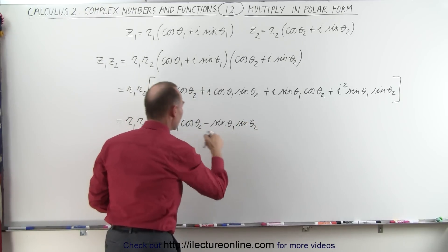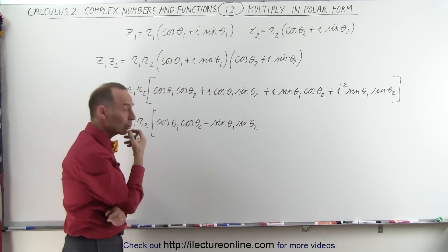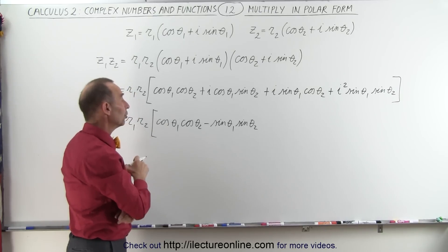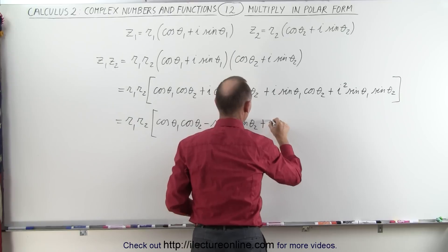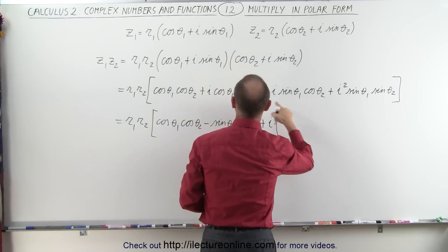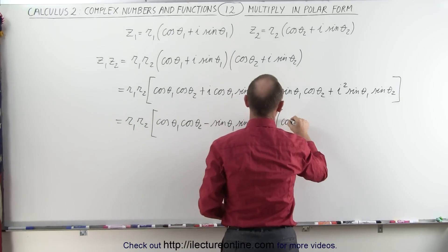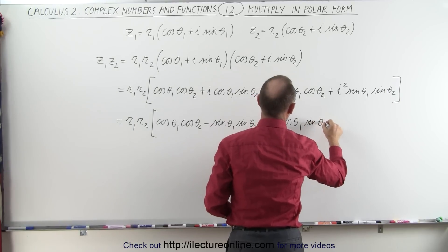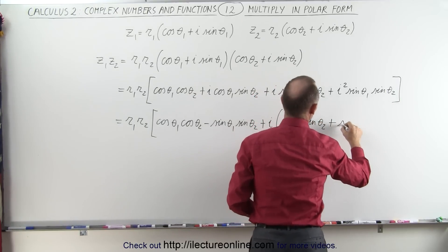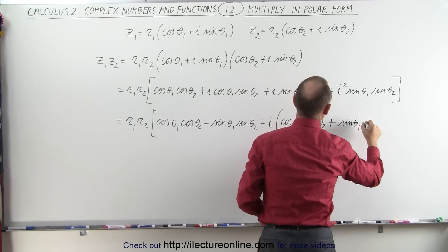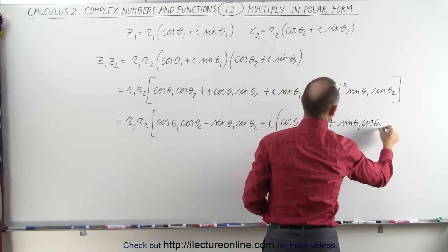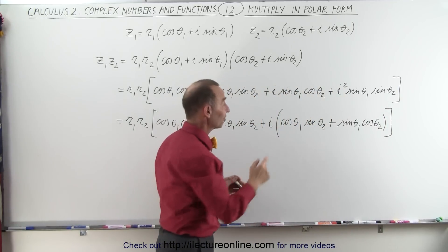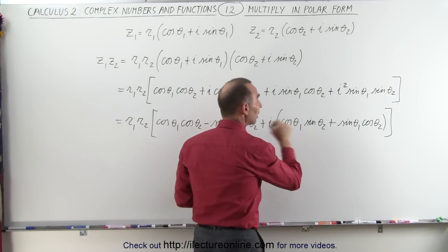Now this becomes familiar because that looks like the cosine of theta1 plus theta2. And then plus i times: the cosine of theta1 times the sine of theta2, plus the sine of theta1 times the cosine of theta2. And that's beginning to look familiar as well, because that looks like the sine of theta1 plus theta2.